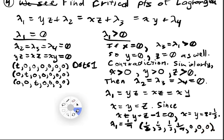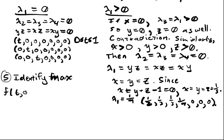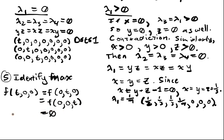Step five is to identify the maximum. Since f(x,y,z) = xyz, we evaluate: f(t,0,0) equals f(0,t,0) equals f(0,0,t) equals zero. And f(1/3, 1/3, 1/3) equals one-third times one-third times one-third, which equals one over 27. Therefore, the maximum value is one over 27, achieved at x equals y equals z equals one-third.